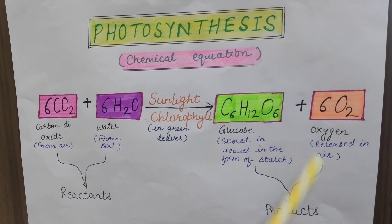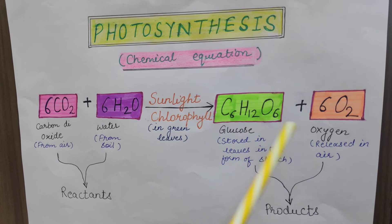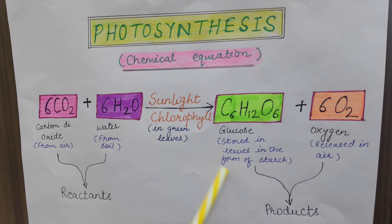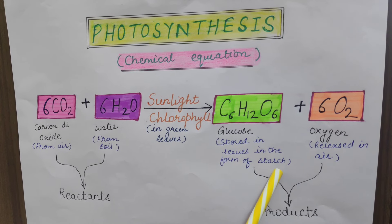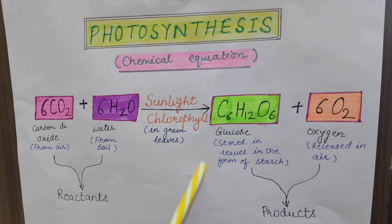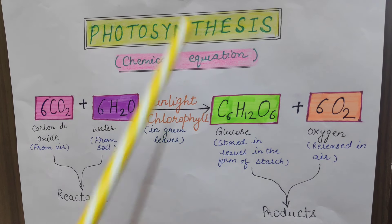The products which are formed are glucose and oxygen. Now this glucose which is formed is stored in the leaves in the form of starch. So that each part of plant can use this starch in future.